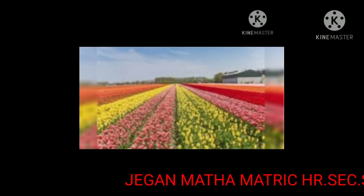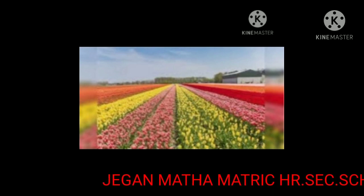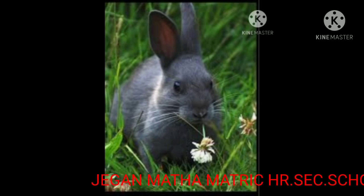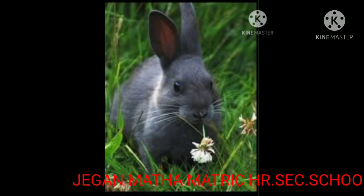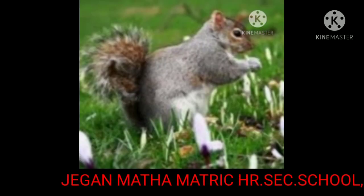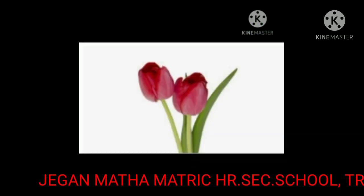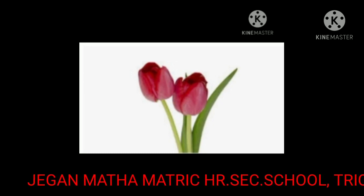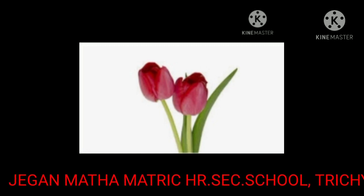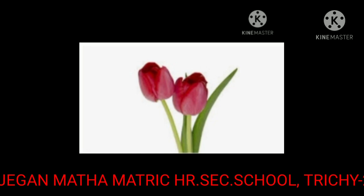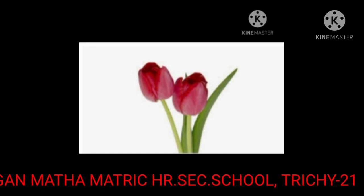Tulip leaves are strap-shaped and covered with wax. Rabbits and squirrels like to eat tulips. Tulips have a short life span — they usually live from 3 to 7 days only. Tulip is the national flower of Turkey and Afghanistan.